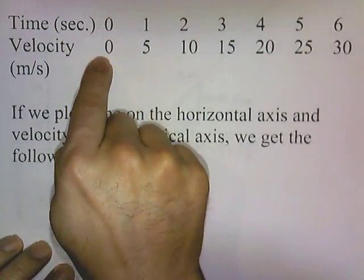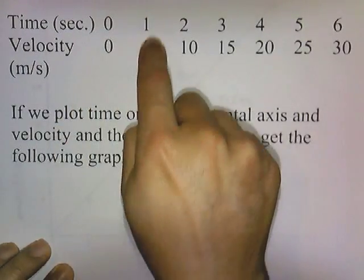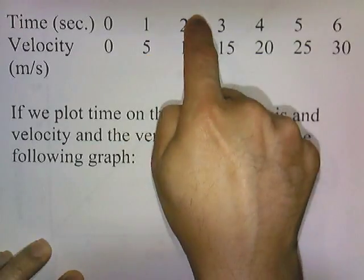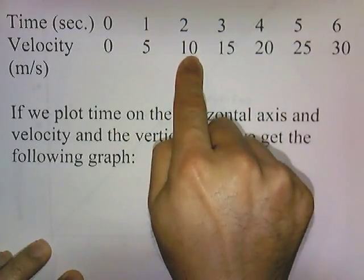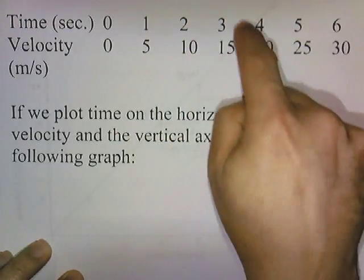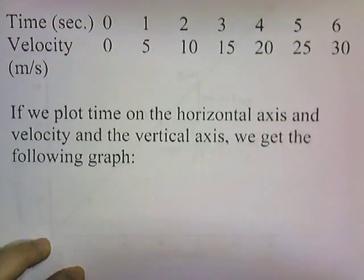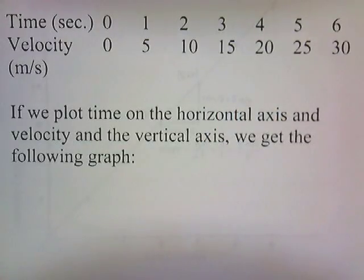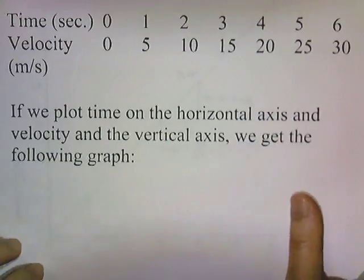The car's at rest, so the initial velocity is zero. One second later, the car's moving five meters per second. Two seconds later, it's moving at 10 meters per second. At three seconds, it's moving at 15 meters per second, and so on. Now, if we plot time on the horizontal axis and velocity on the vertical axis, we get the following graph.